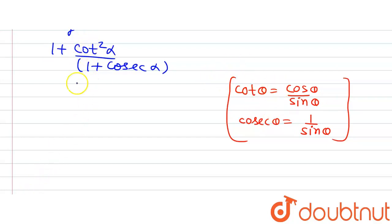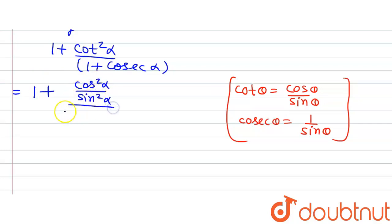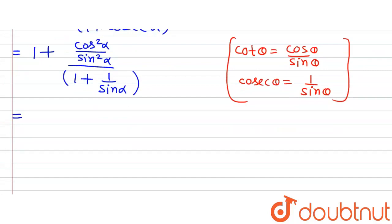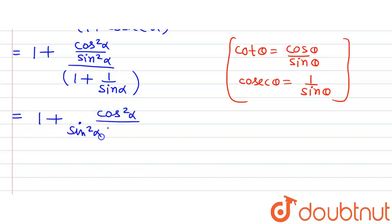Using these relations, we can write 1 + cot²α as 1 + cos²α divided by sin²α, and 1 + cosecα as 1 + 1/sinα. On solving further, in the numerator, if we take the LCM — which is sinα — we will get (sinα + 1) divided by sinα.